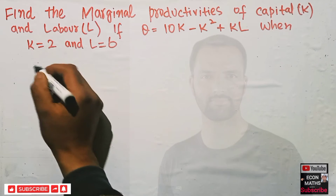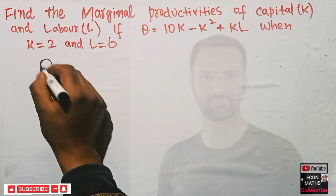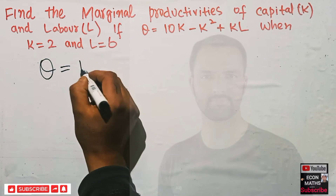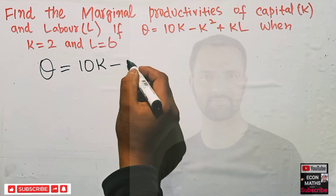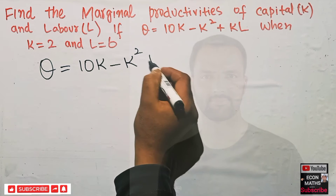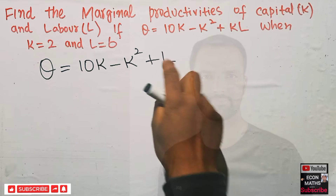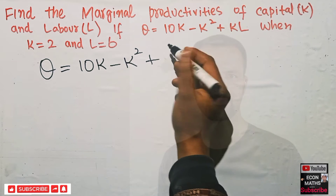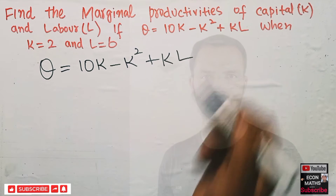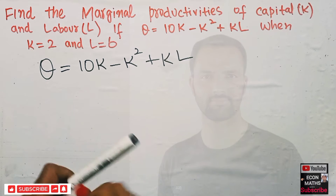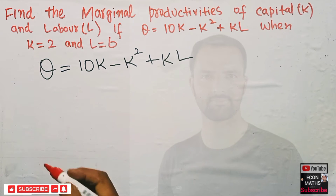Our production function is Q = 10K - K² + KL. This is our production function. Now, what is the marginal productivity of labor?